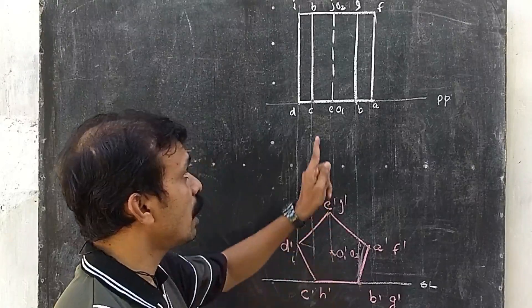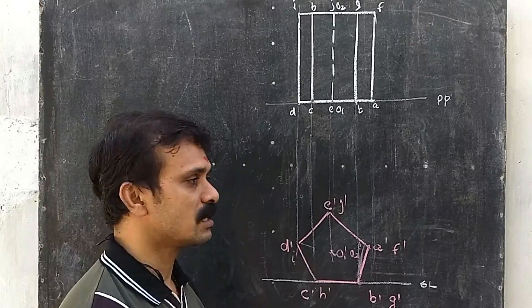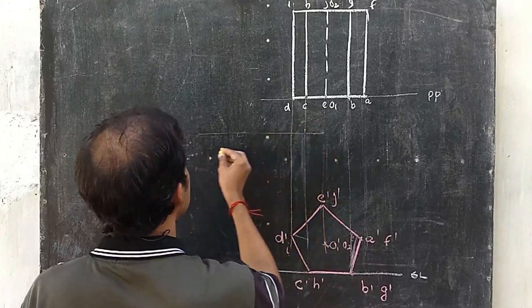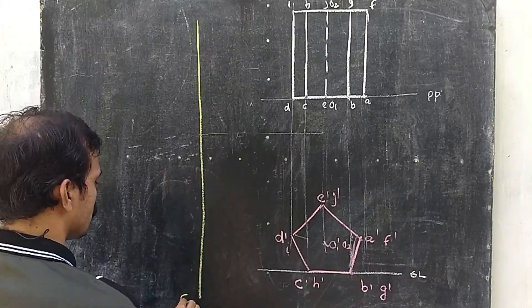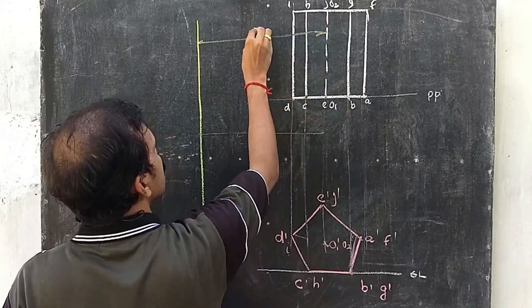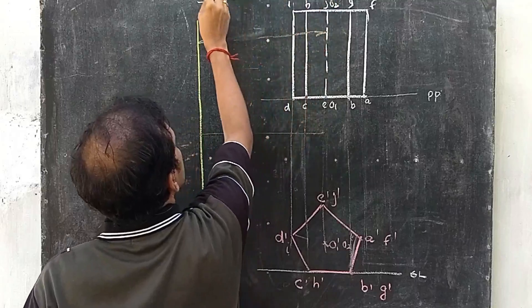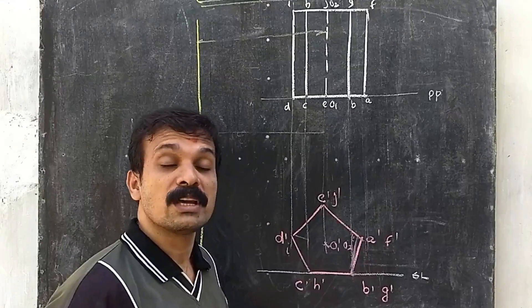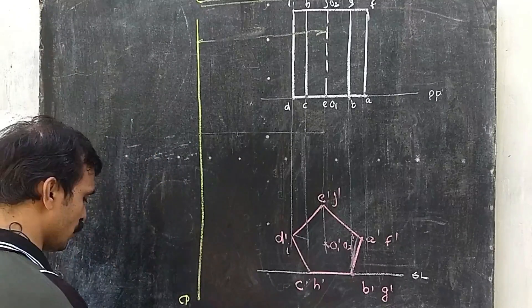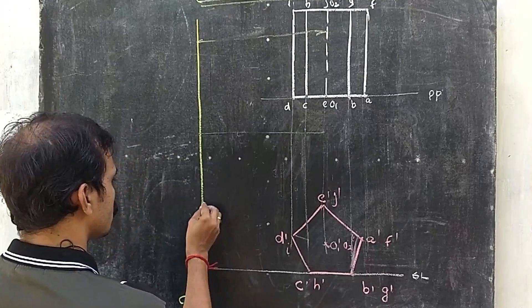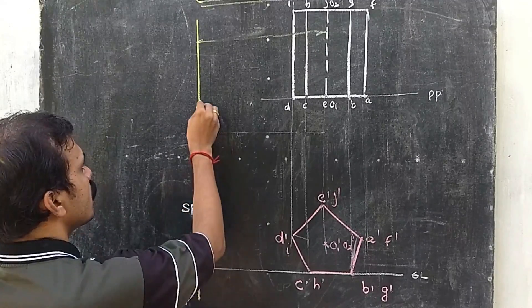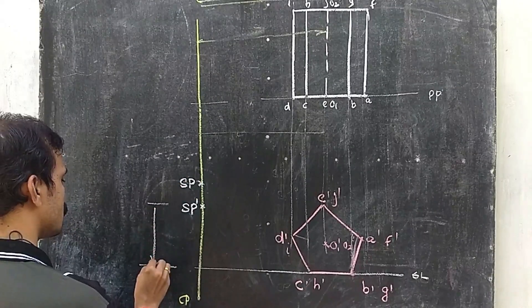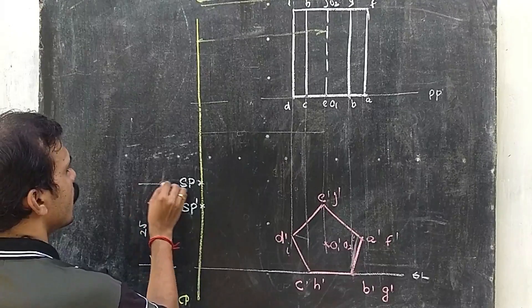Now look at the central plane — it is given that the central plane is 70 mm towards the left, so this distance will be 70. Now look at the station point: it is given that the station point is 25 mm above the ground and 52 mm in front of the picture plane, so it will be somewhere here. This distance will be 25 and this distance will be 52.